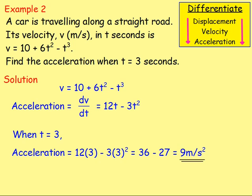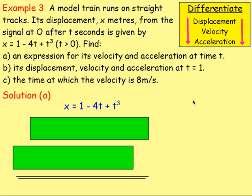Example number three: a model train runs on straight tracks. Its displacement x metres from the signal at O after t seconds is given by x = 1 − 4t + t³, where t > 0. Find: (a) an expression for its velocity and acceleration at time t; (b) its displacement, velocity and acceleration at t = 1; and (c) the time at which the velocity is 8 metres per second. For part (a), we have x = 1 − 4t + t³.